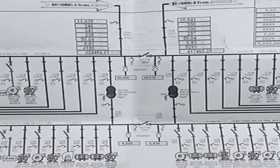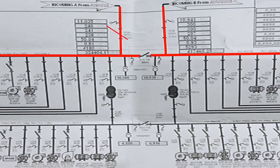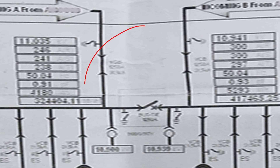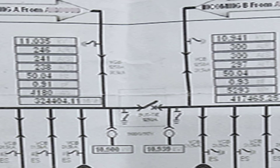Between the two sections we have a bus tie circuit breaker used when power goes off on one of the two incomings. For example, if incoming A is off for any reason, half of the substation will lose power. This bus tie circuit breaker will turn on automatically so that section B provides power to the other half until incoming A returns. Also, when maintenance is applied to any incoming circuit breaker, these three circuit breakers work in a two-out-of-three technique — only two will be on at any time, and the third will be turned off.